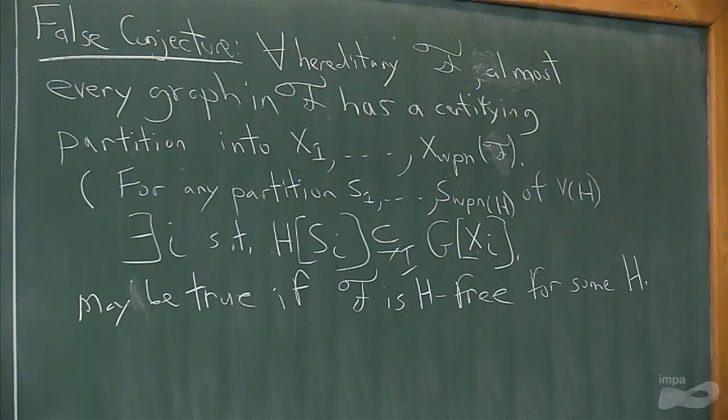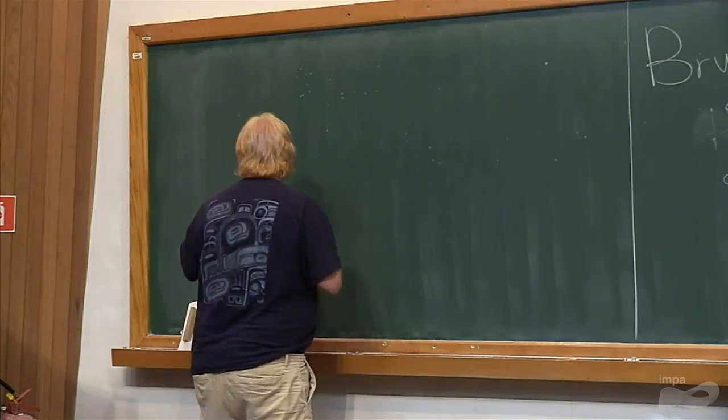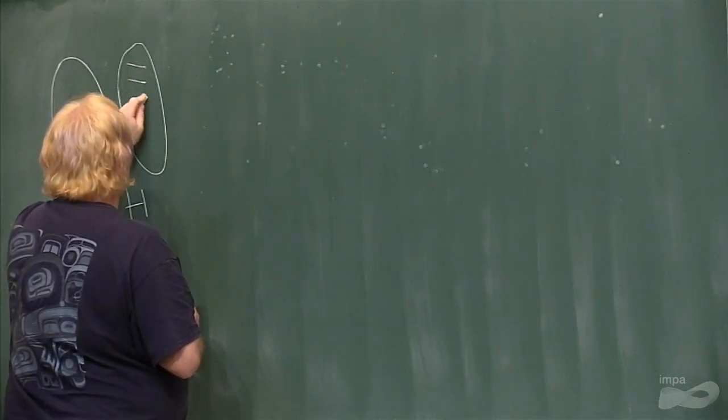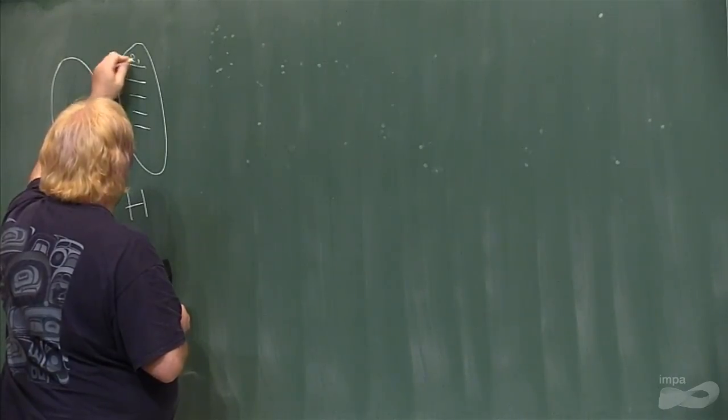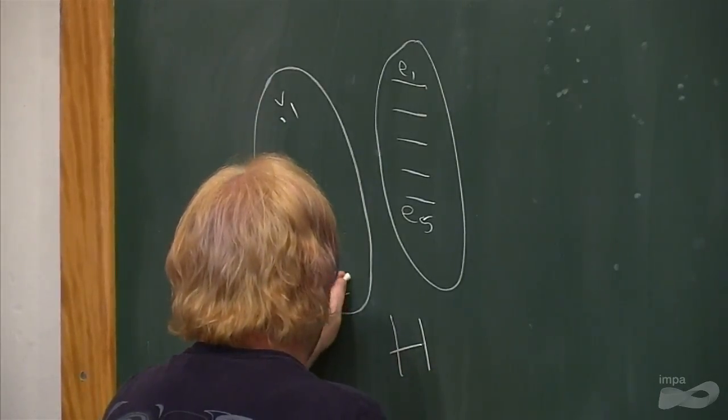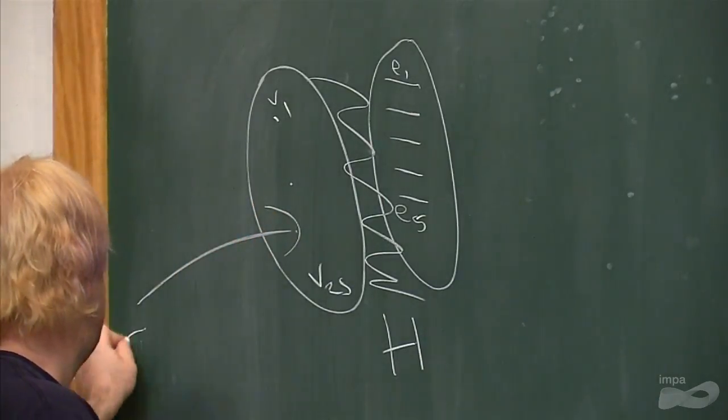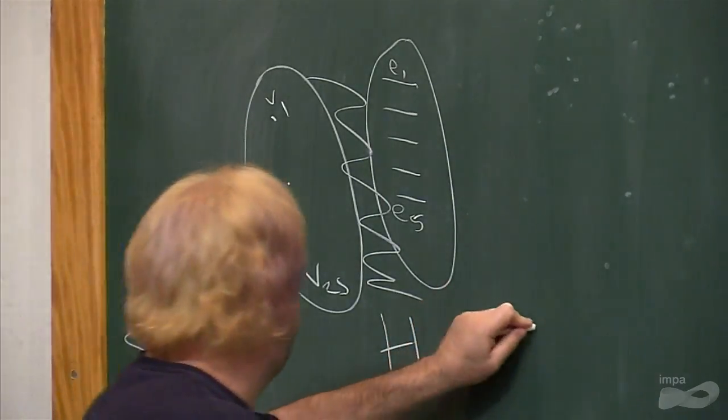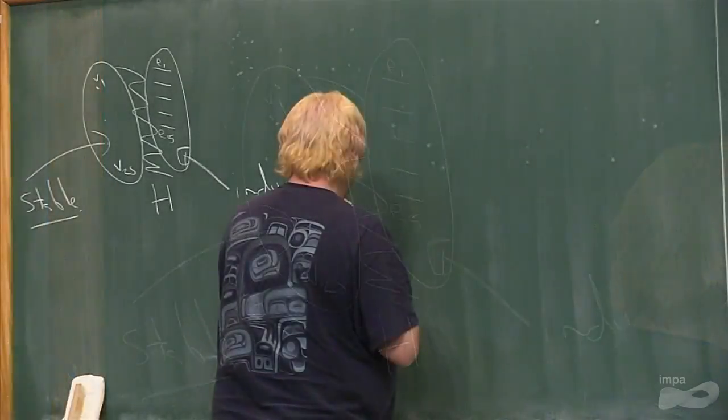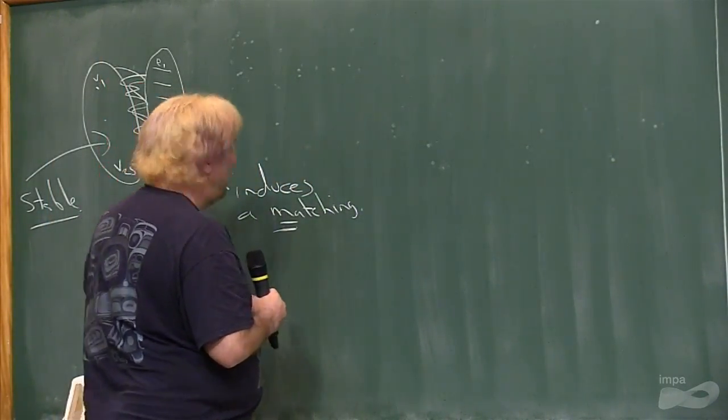So now let me tell you why it's not true in general. It's an example due to Balog-Bolyabash and Simonovitz. And basically what we do, here's a graph H. We have K_{2,S} to S. And then we add S edges on one side. So this is a stable, this induces a matching. And there's all edges in between.